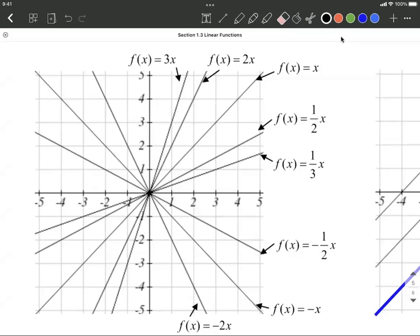All right, so all of these, if we're thinking like y equals mx plus b, all of these have the exact same y-intercept. There's nothing after the x term. So notice they all have the y-intercept right here at the origin of zero.